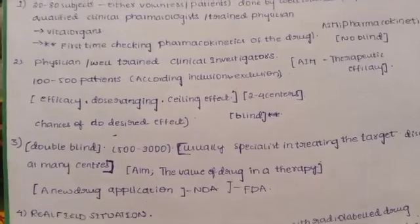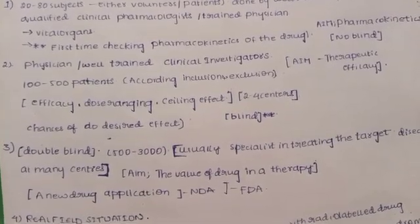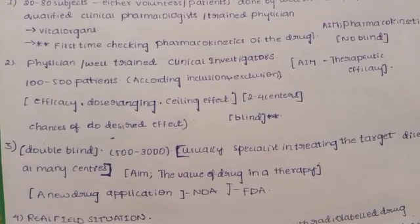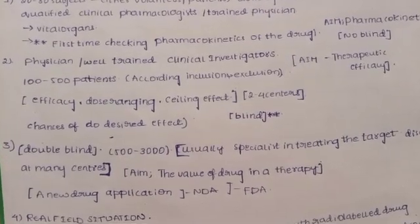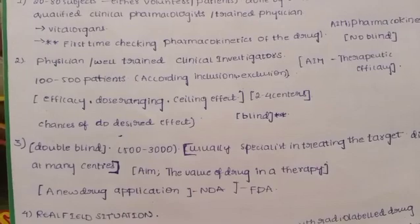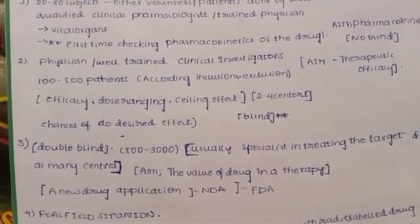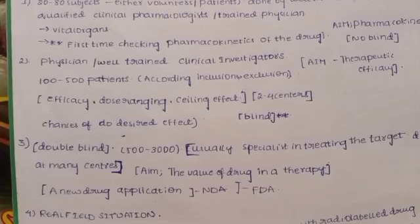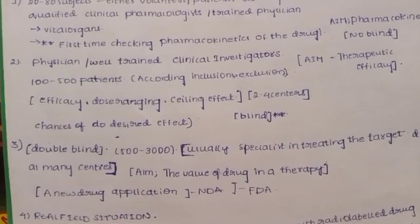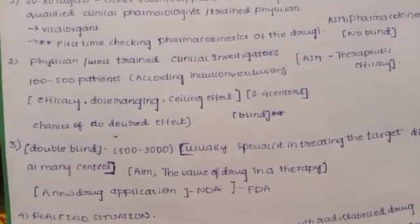Regarding blinding: in Phase 1 there is no blind — the drug information is known. Single blind means only the patient is unaware of the drug details. Double blind means both the patient and the pharmacologist or clinical investigator are unaware of the drug information.